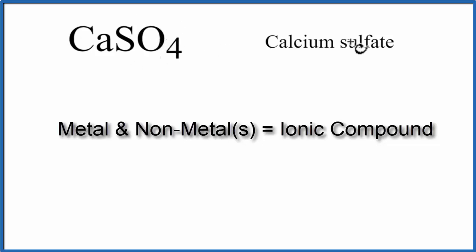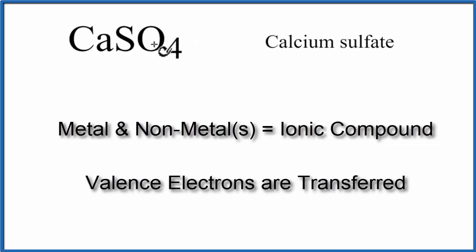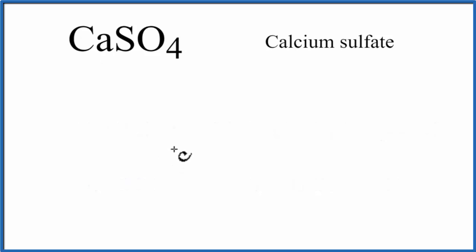The SO4, that's the sulfate, that's a polyatomic ion, a group of non-metals. So we'll write Ca for calcium, and then we'll put the sulfate ion next to it.